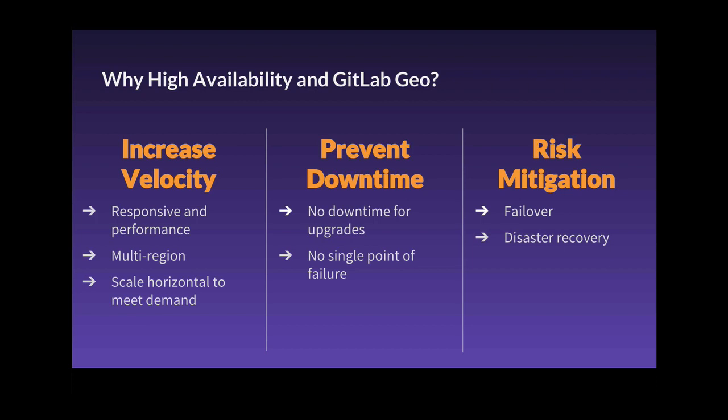There are three main reasons for this. The first is the responsiveness and performance of your development team, even at peak load. If the demand increases, you have the control to scale out those resources on the fly. Additionally, HA and Geo are important for geographically dispersed teams, as you can lower the latency and increase speeds by creating a secondary instance closer in proximity to the other parts of your development team.